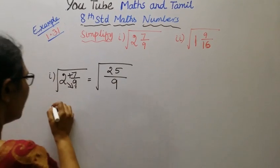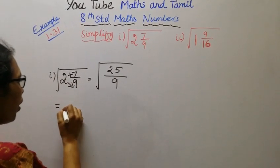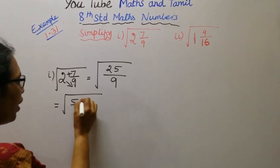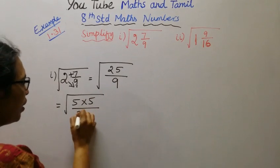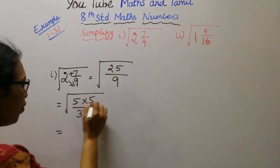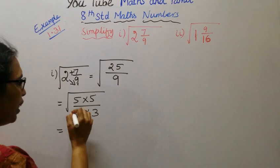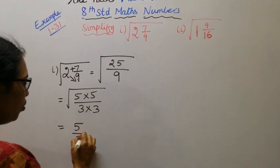Now, square root of 25 by 9. 5 into 5 is 25, 9 is 3 into 3. Square root of 5 into 5, 3 into 3.